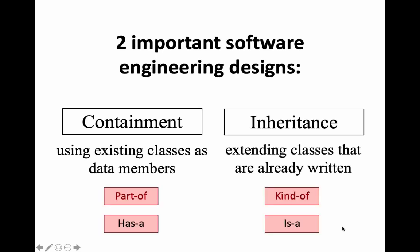We have these two important designs. Containment is using existing classes as data members — in Java those are instance variables. Inheritance is extending classes that are already written. Containment is great where we've got some library class that does what we want. Inheritance gives us similar things, with the unique ability to override some existing methods, so that library class can end up calling our new code — old code calling new code.